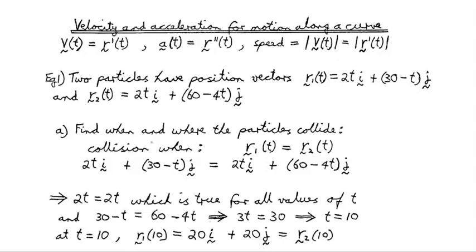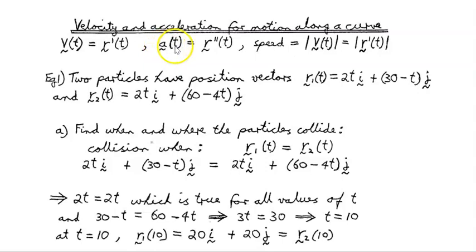In this video, we're going to look at velocity and acceleration for motion along a curve. The velocity vector as a function of time is the first derivative of the position vector with respect to time, and the acceleration vector as a function of time is the second derivative of the position vector.